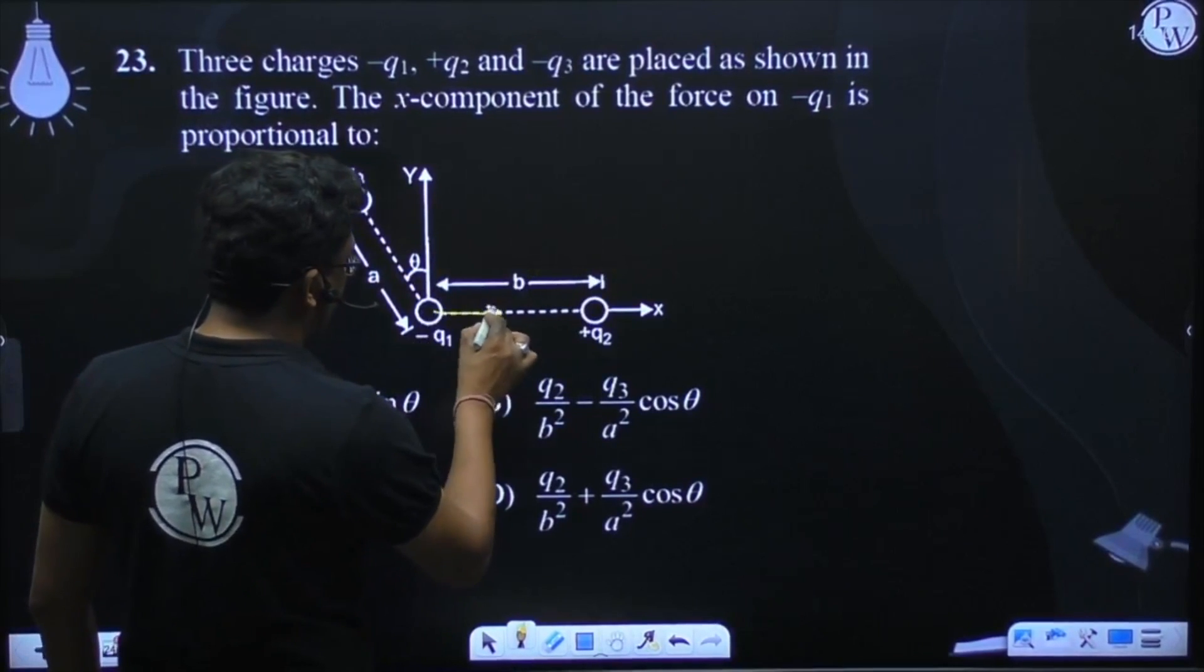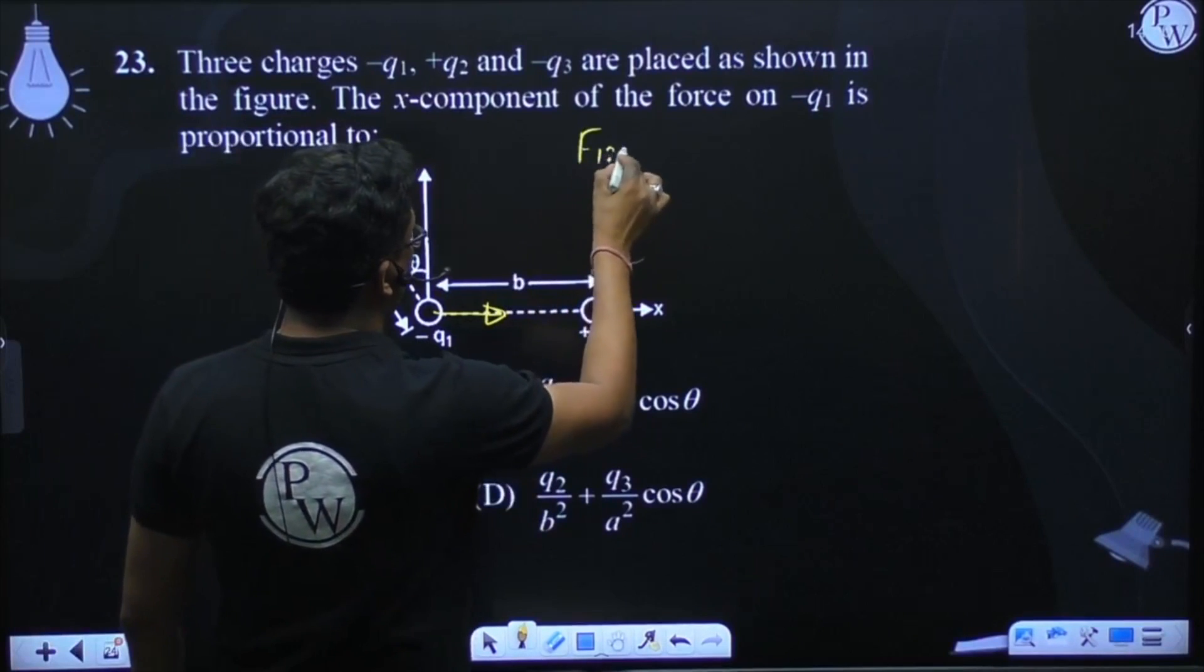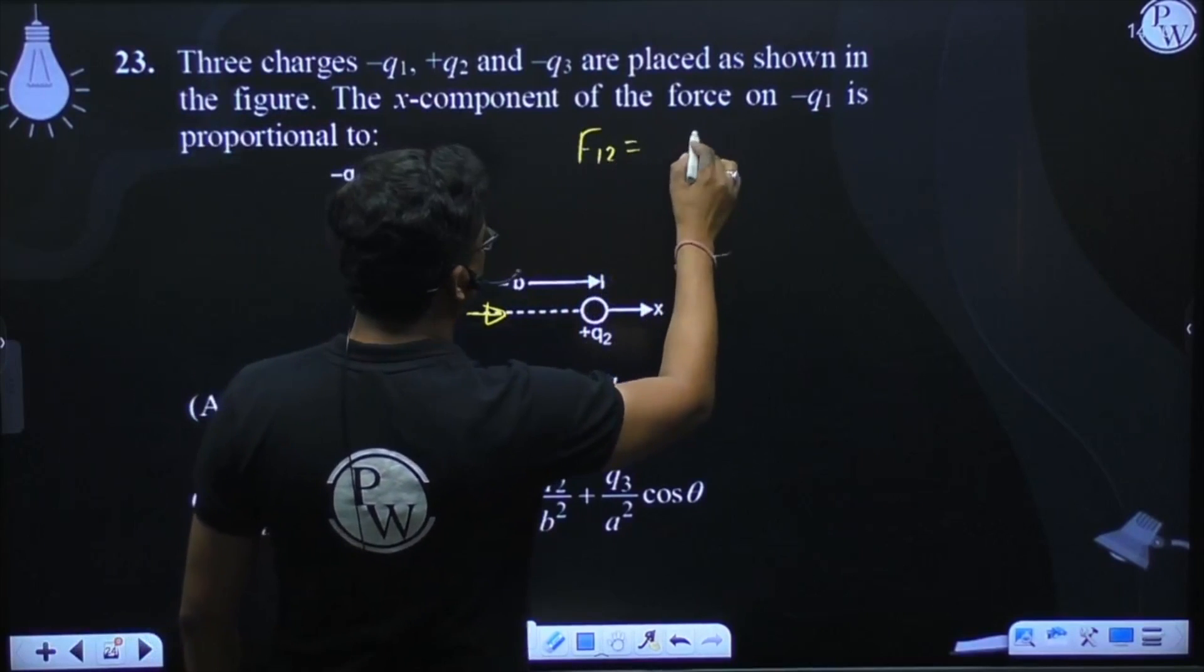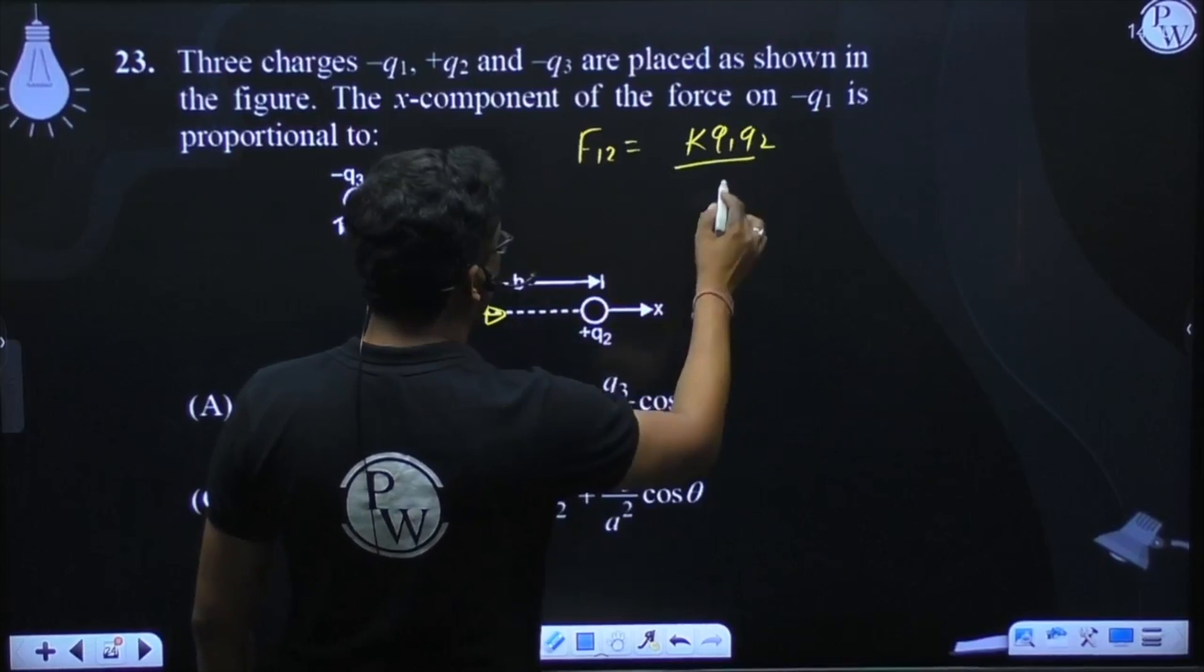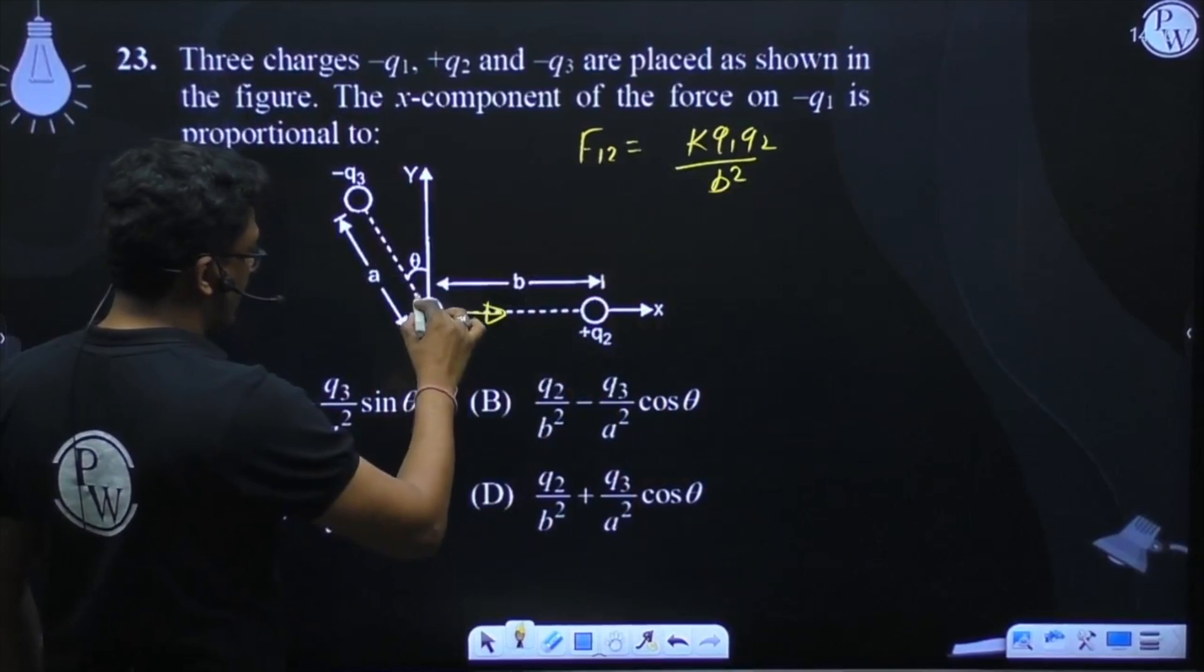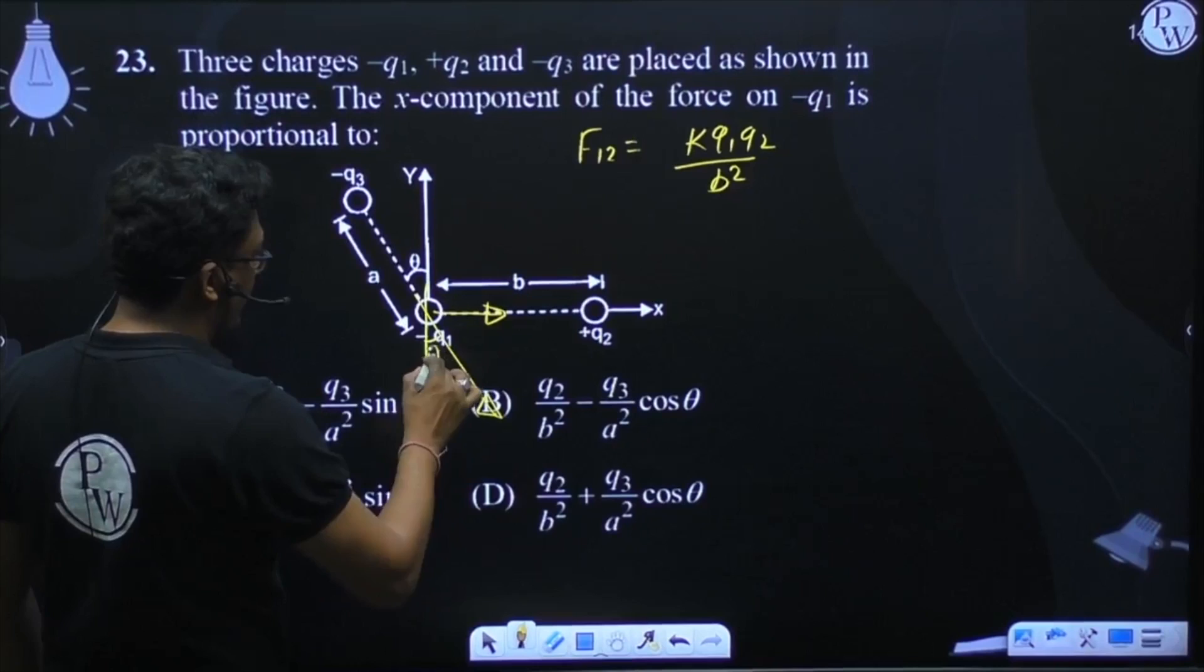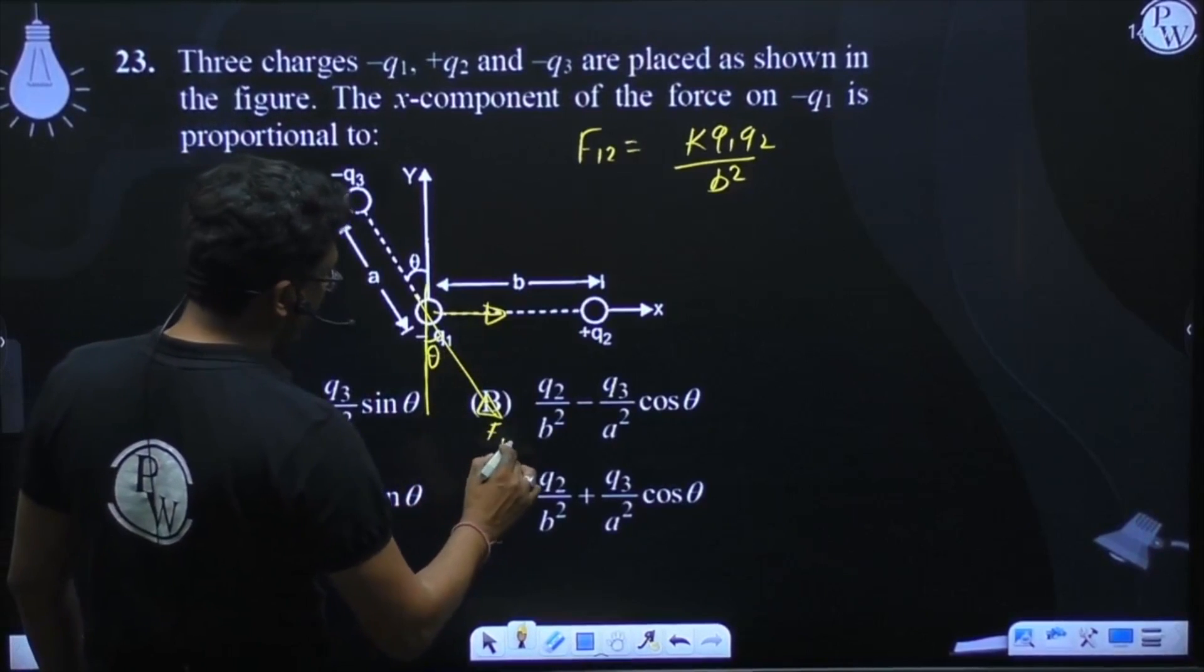The force on 1 due to q2 will be K q1 q2 by b squared. This is your force on 2. Now see here, when I extend this here and extend it, this comes out to be your theta, and this was your force on 1 due to 3.